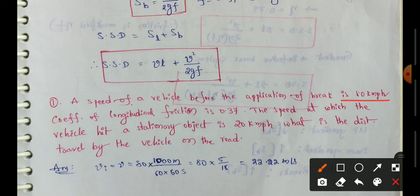Next one, coefficient of longitudinal friction is 0.37. Next, speed at which the vehicle hit stationary object is 20 kmph. So this vehicle hit an obstruction, so that hit speed is 20 kmph.